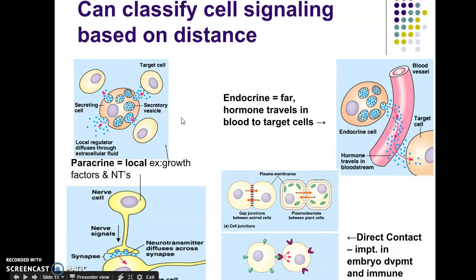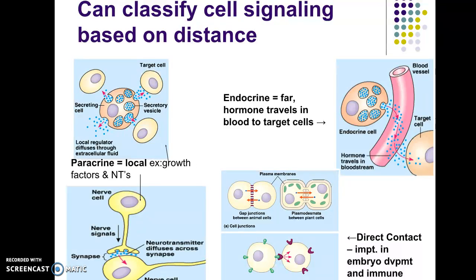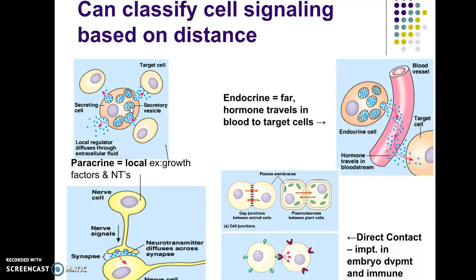Other forms of local signaling: you have paracrine signaling, a great example of which is going to be growth factors in animal cells — the name says it all, growth factors control cell dividing and cell growth. And synaptic signaling. For paracrine signaling, here's your secreting cell; inside the cell you have all these little blue dots — those are your local regulators, or signaling molecules. This secretory vesicle with your signaling molecules excretes out of the cell through exocytosis, and those signaling molecules reach all the target cells nearby. For synaptic signaling, which is between two nerve cells, the gap between them is called a synapse.